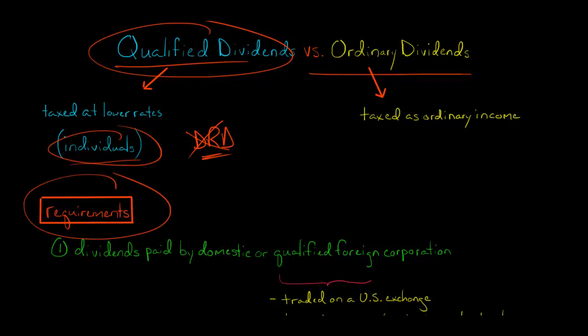Here are the requirements to be considered a qualified dividend. First, the dividends need to be paid by a domestic corporation, in other words, a U.S. corporation, or a qualified foreign corporation. So what is a qualified foreign corporation?